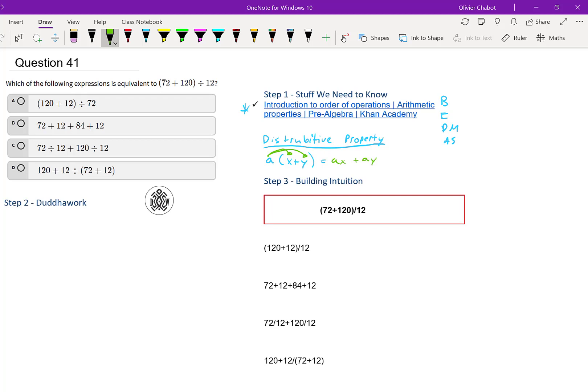So we have 72 plus 120 divided by 12. So there's many ways we can do this problem. If we just try to do the BEDMAS way, well we would do the brackets first. So 72 plus 120, that's 192 I believe. So we have 192 divided by 12. Here for this question, we have access to our calculators. If we do 192 divided by 12, we have 16.